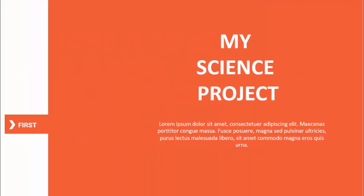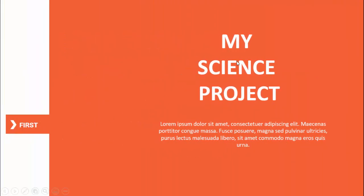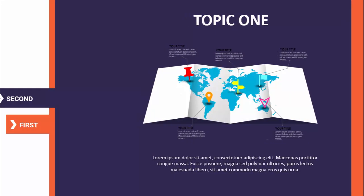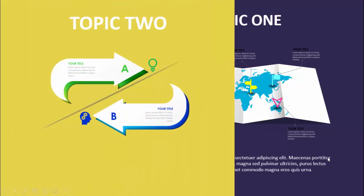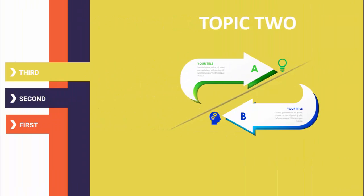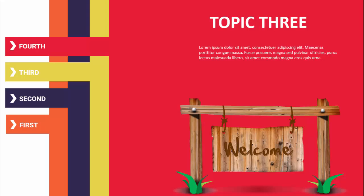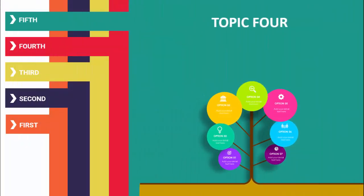Let me show you how it works. When I click, the first information comes — you can see the first page and I'm talking about my science project. You can add some detailed text here, and for each click it gives details on each subject. Topic one, topic two, topic three, and then topic four. You can add as many pages as required.